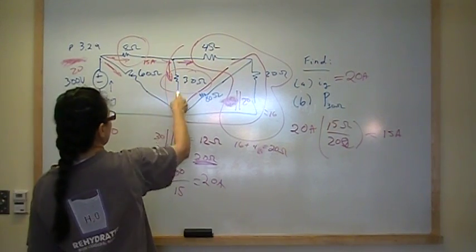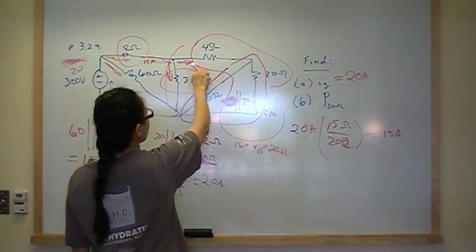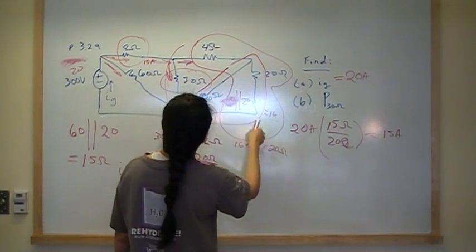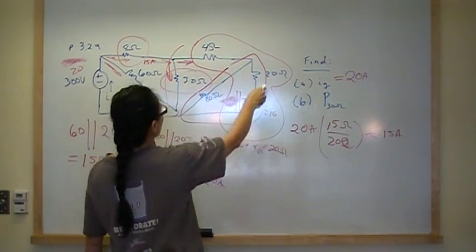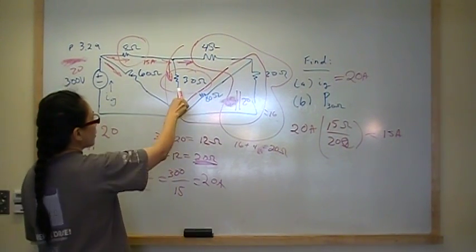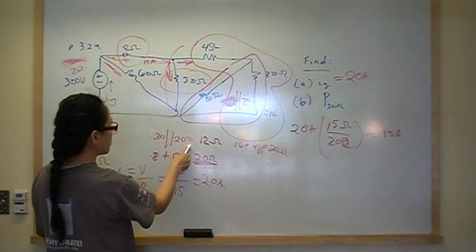On this branch, it will clearly see 30, and the rest of this we said was 4 in parallel with 16, which is 20. So this here, this whole thing here, is worth 20, 20 ohms. So we've got 30 in parallel with 20, which we said was 12.